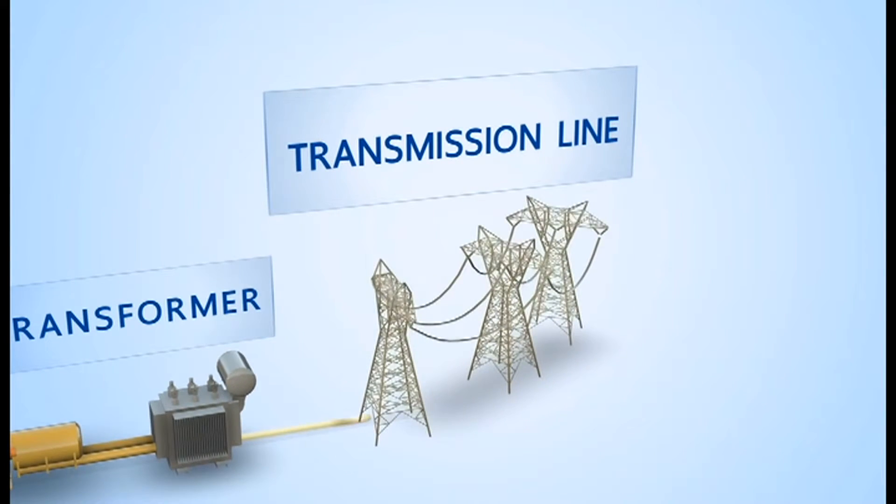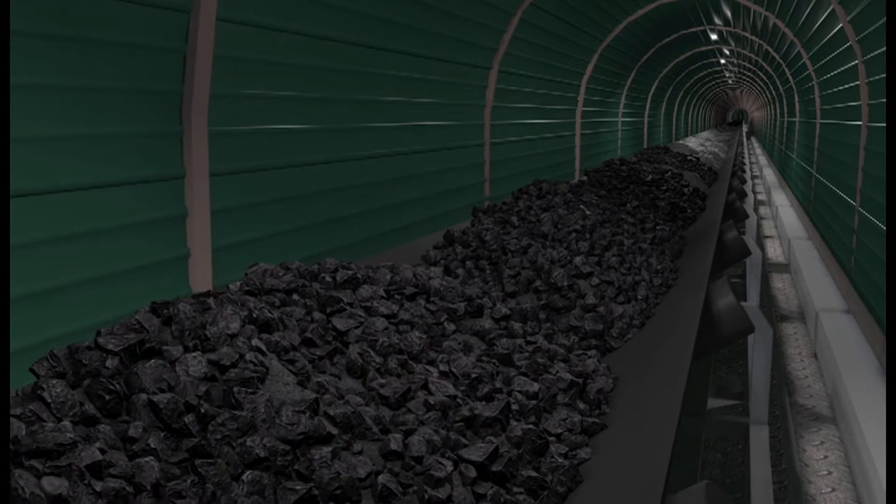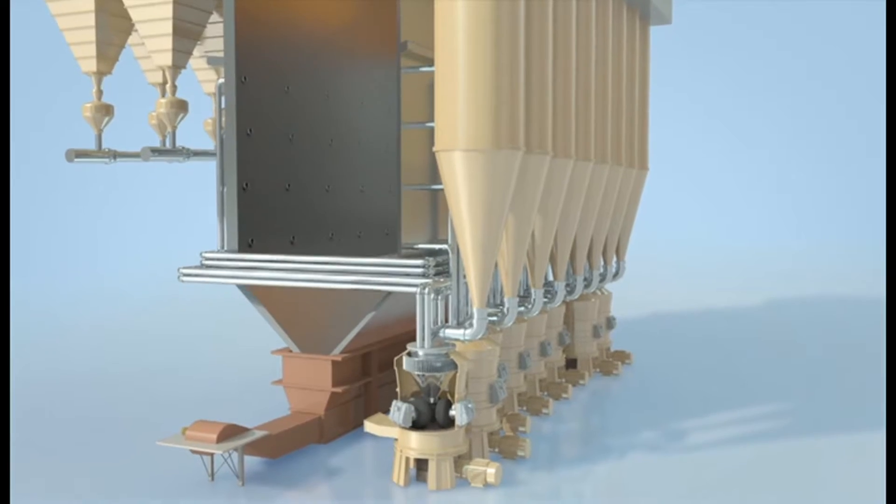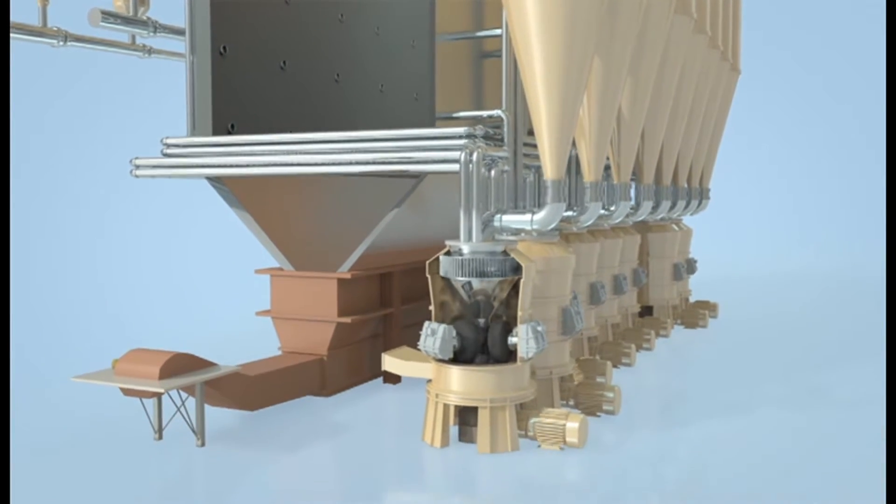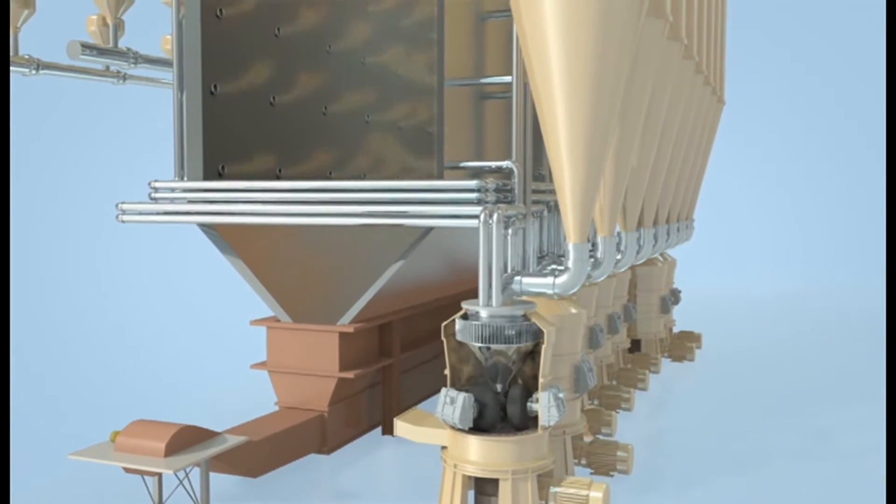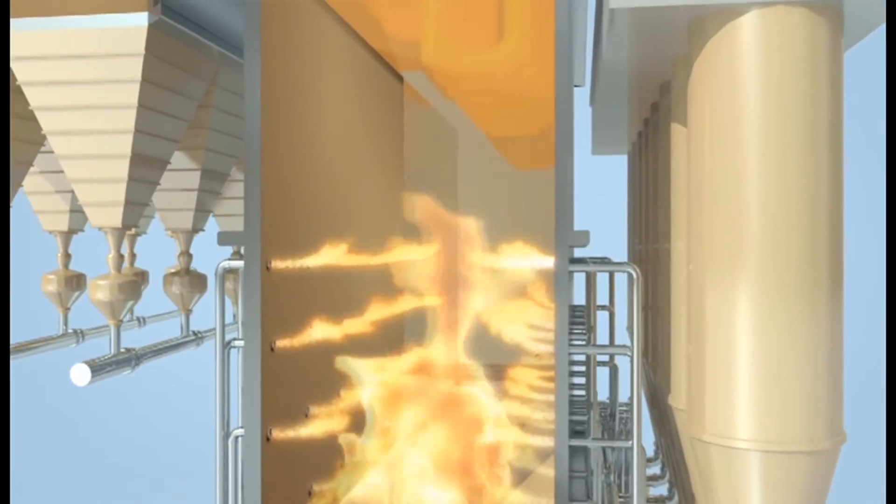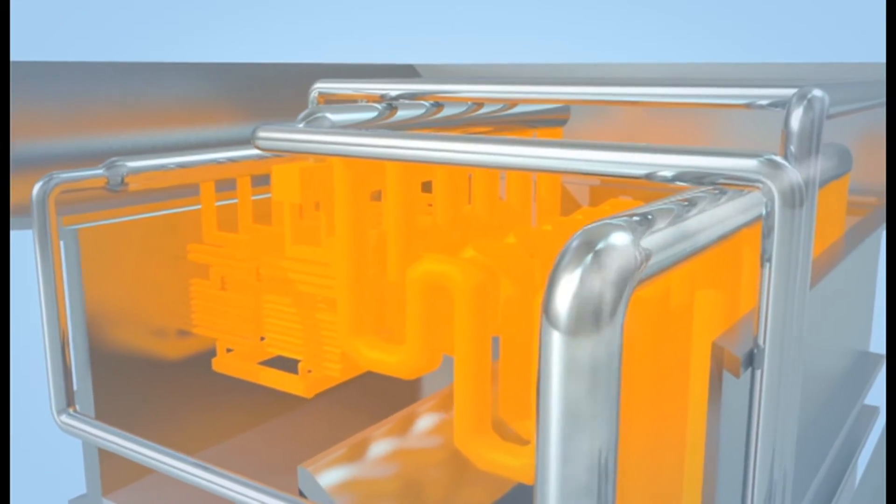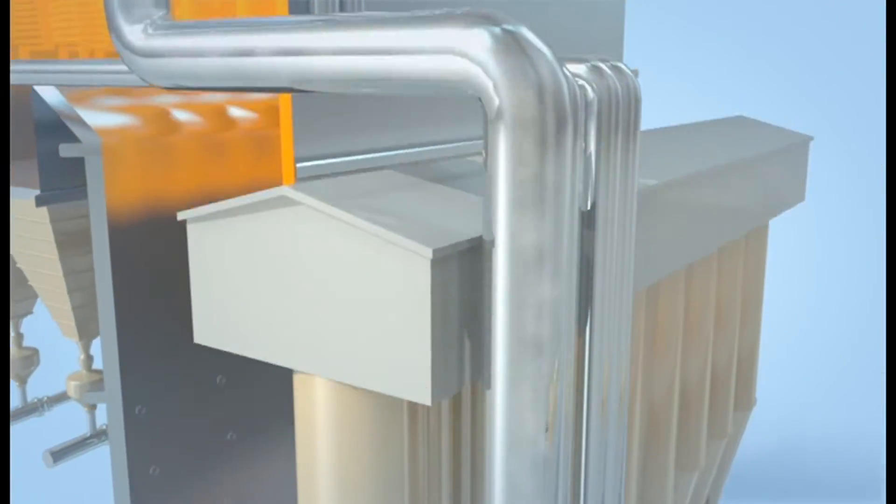The electricity generating process starts by transferring the coal into the coal pulverizer. It grinds the coal into powder, then blows it along with the air into the combustion chamber. The burning then causes the heat emission and transfers the energy to the water in the pipes around the chamber's wall.